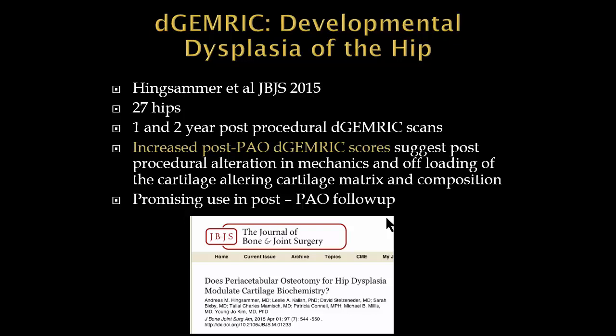Hingshammer, also in JBJS, looked at DDH patients one and two years after PAO and found that patients' dGEMRIC scores actually improved after their PAOs, suggesting that post-procedural alteration in mechanics and offloading of hip cartilage allows for healing of the cartilage matrix. This has promising implications for follow-up — if a patient's post-PAO dGEMRIC value hasn't improved or is getting lower, it may suggest that the mechanics and offloading are not yet optimized.